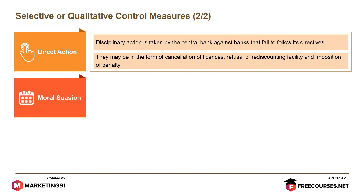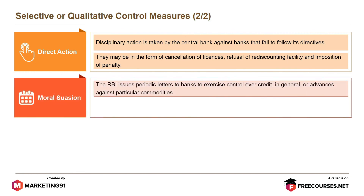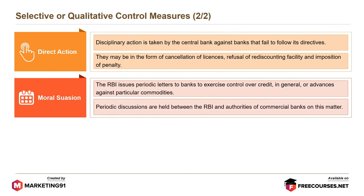Lastly, moral suasion. The RBI issues periodic letters to banks to exercise control over credit in general or advances against particular commodities. Periodic discussions are held between the RBI and authorities of commercial banks on this matter.